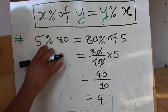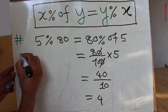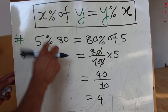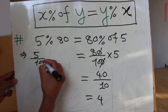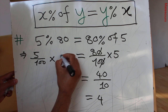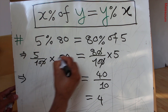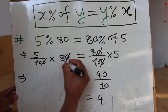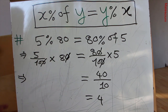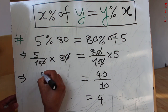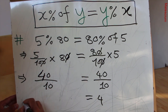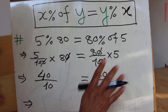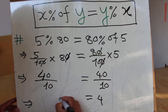We have to prove that the left-hand side is also 4. Five percent means 5 over 100, times 80. The zeros cancel each other, leaving 5 times 8 which is 40, divided by 10. So the left-hand side is 40 over 10, which equals 4 — the same as the right-hand side.